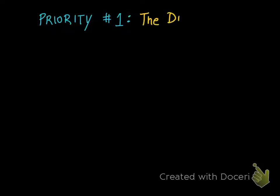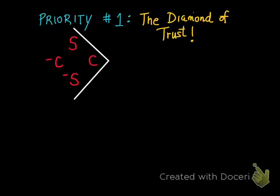We've taught calculus for a few years without having this tool. This tool is called the Diamond of Trust, and with it we've saved a lot of mistakes, especially sign errors when taking derivatives of trig functions. The Diamond of Trust looks like this.